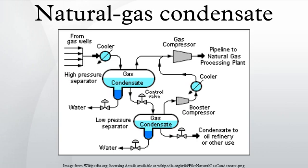Some very early internal combustion engines — such as the first types made by Carl Benz — and early Wright Brothers aircraft engines used natural gasoline, which could be either drip gas or a similar range of hydrocarbons distilled from crude oil. Natural gasoline has an octane rating of about 30 to 50, sufficient for the low compression engines of the early 20th century. By 1930, improved engines and higher compression ratios required higher octane refined gasolines to produce power without knocking or detonation.